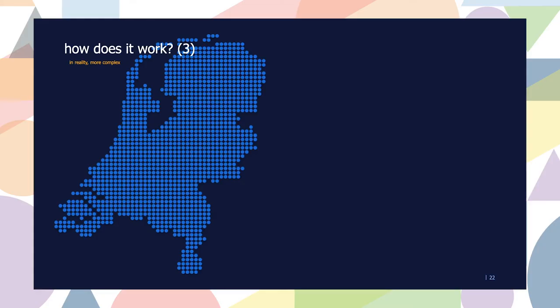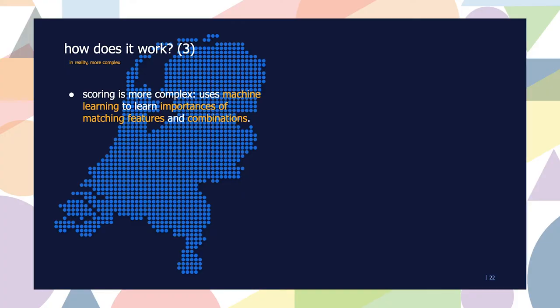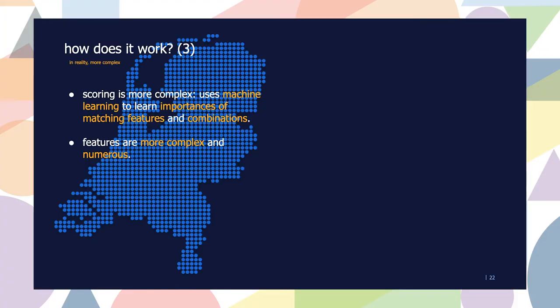In the real world this is more complex — it's not just a matter of summing up a few numbers. The scoring part is much more complex: we use machine learning to automatically learn the scores. So what I showed earlier where a match is plus one and a non-match is zero, in reality those scores are learned automatically. The model may also pick up combinations — for example learning that in some professions distance to the job is not as important as in others. Our actual features are also much more numerous and complex.